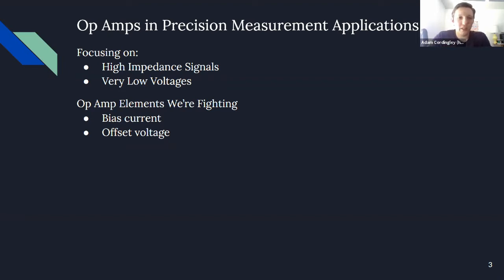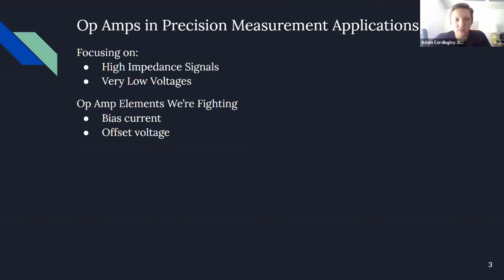This encompasses most of the struggles you deal with — you may be dealing with both of those things at once. The main op amp elements we're fighting are things related to bias current and offset voltage.